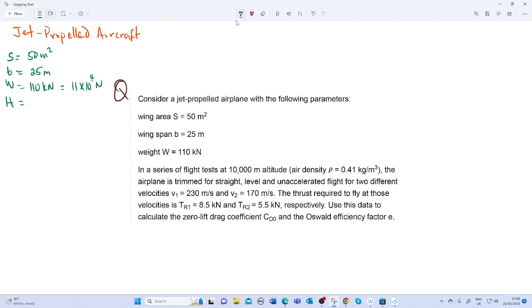We have altitude 10,000 meters. We have the density at the altitude which is 0.41 kg per meter cubed. We have the first velocity for the trim of the aircraft which is 170 meters per second.